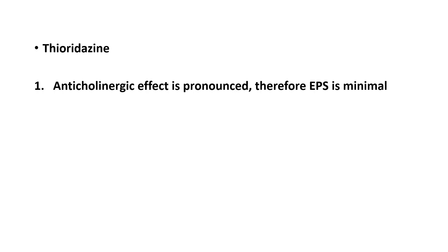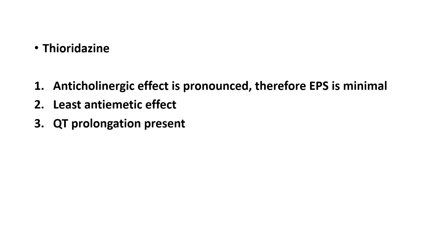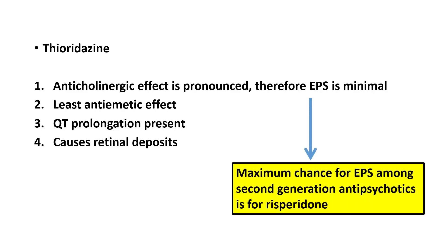Thioridazine is a first-generation antipsychotic with the least incidence of extrapyramidal symptoms because it also has an anticholinergic effect. However, it has important adverse effects including QT prolongation with increased risk of arrhythmias, and retinal deposits that can cause impaired vision. It is worth noting that among the second-generation antipsychotics, the drug with the maximum chance of causing extrapyramidal symptoms is risperidone.